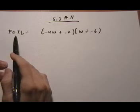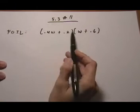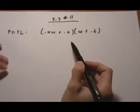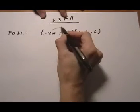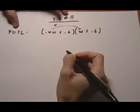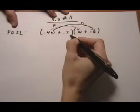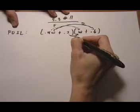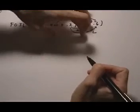Now foiling is just a catchy way of saying multiply each term of one binomial onto each term in the other binomial. So we're first going to multiply first terms, the F in foil. And then we're going to multiply outer terms and that gives us the O. And then we're going to multiply inner and last. So that's where the foil comes from.